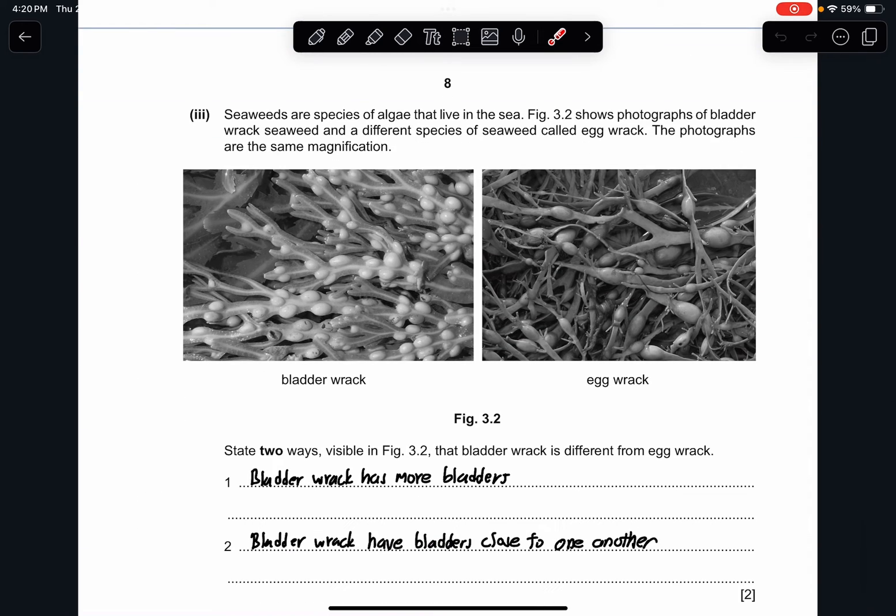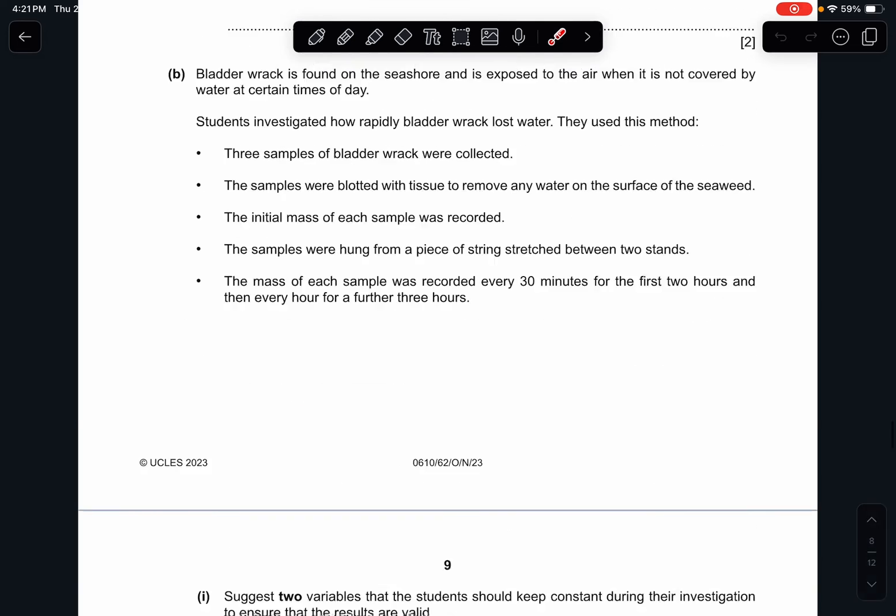Part 3. Seaweeds are species of algae that live in the sea. Figure 3.2 shows photograph of a bladder wrack seaweed and a different species of seaweed called egg wrack. The photographs are in the same magnification. State two ways visible, this is the keyword, the bladder wrack is different from the egg wrack. The most obvious one in the bladder wrack is that there is more bladders. And then the bladder wracks have their bladders very close to each other, while in the egg wrack, it's much further away. You can see the distance. It's much more spread apart.